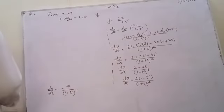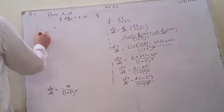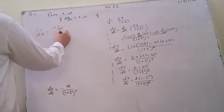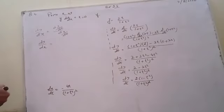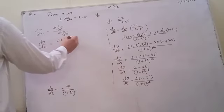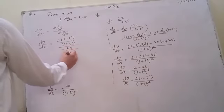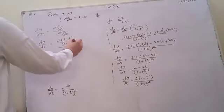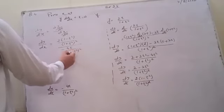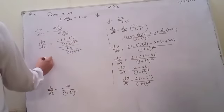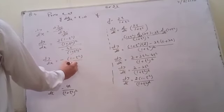Now dy by dx equals dy by dt divided by dx by dt. This gives 2 into 1 minus t square over 1 plus t square whole square, divided by minus 4t over 1 plus t square whole square. The 1 plus t square whole square terms cancel, so dy by dx equals minus 1 minus t square over 2t.